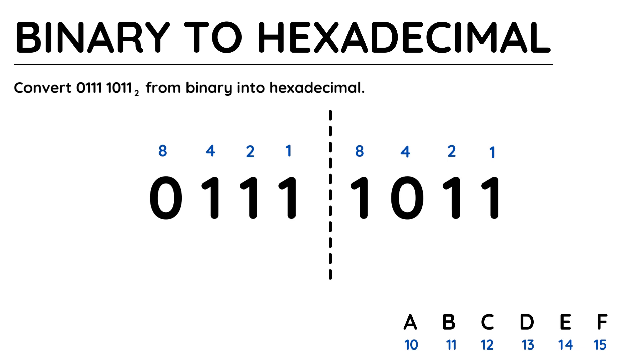I've written the binary number out neatly in the center, and it's optional, but I always draw a dashed line between the two sets of 4 bits. When working with hexadecimal, we treat groups of 4 bits separately, and 4 bits is known together as a nibble.